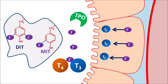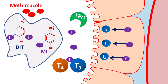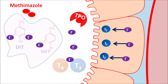Tyroperoxidase is therefore a key enzyme in the synthesis of thyroid hormones. Methimazole, as an anti-thyroid agent, blocks the activity of tyroperoxidase, thereby reducing the formation of T3 and T4 hormones. In this way, methimazole controls the symptoms associated with hyperthyroidism.